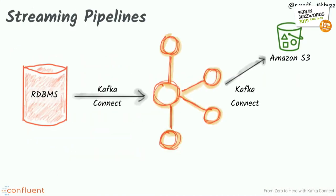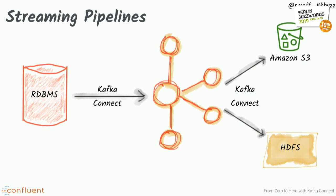People use Kafka Connect for different things. Some use it for very simple, fairly dumb pipelines - offloading data from here to put it over there. Others use it because Kafka persists data: you bring the data in once, and you can put it over here for this use case, over there for that use case, and somewhere else for something else. You can use Kafka Connect to save the same data and put it in different places to suit your purpose.